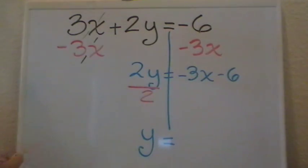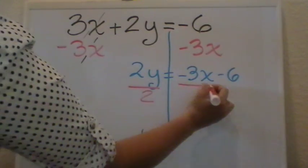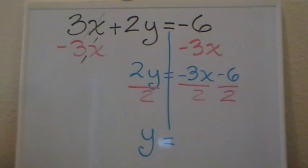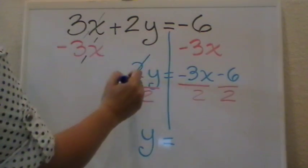Now, don't forget that on the other side, you must divide each one of your terms. So what would happen now is that we have our number 2s are going to be canceled.